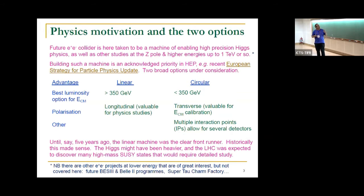A future e+ e- collider is here taken to be a machine enabling high-precision Higgs studies. Lower-energy machines continue and there are plans for future ones like the Super Tau Charm Factory. I'm concerned with machines operating for Higgs studies at the Z pole and higher energies up to a TeV or so. My talk is rather short, taking this as read.